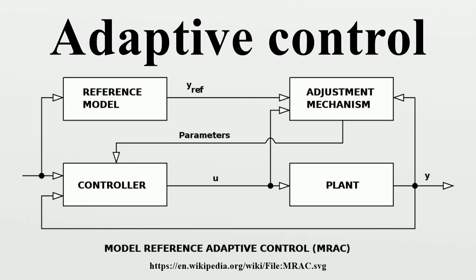Further applications include adaptive or self-tuning control of non-linear controllers for non-linear processes, and adaptive control of multi-variable controllers for multi-variable processes. Usually these methods adapt the controllers to both the process statics and dynamics. In special cases the adaptation can be limited to the static behavior alone, leading to adaptive control based on characteristic curves for the steady state or to extremum value control optimizing the steady state.